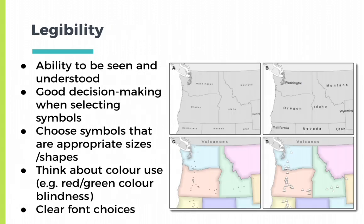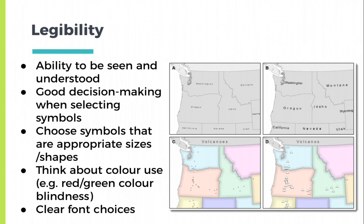Another principle is legibility. Your labels must be clear, and use good decision-making when selecting symbols. Think about color use, and mitigate for red-green colorblindness — we'll talk more about designing for accessibility in another lecture. Make font choices that are clear and easy to read. In image A, the labels for the states are too small, while they are okay in image B. In image C, the dots do not represent volcanoes quite as well as in image D.